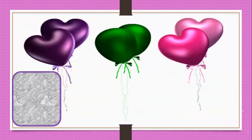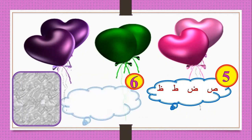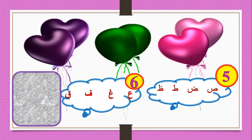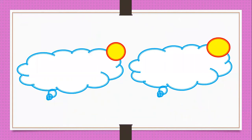Our lesson today has three parts. In the first part, we will learn the fifth group in the similar letters in writing. In the second part, we will learn the sixth and the last group in the similar letters in writing. In the last part, we will do exercises to practice the similar letters in writing. We already studied the four groups before, and today we will complete the fifth group and the sixth group.